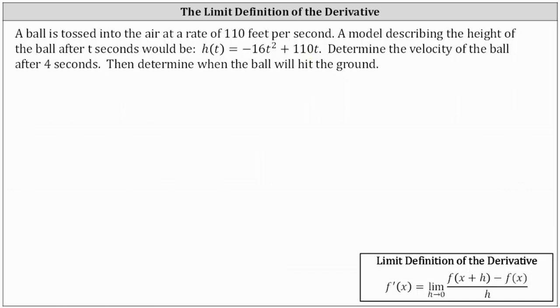We need to begin by determining the velocity function v of t, which is equal to the derivative of h of t. We are told to use the limit definition of the derivative shown below.